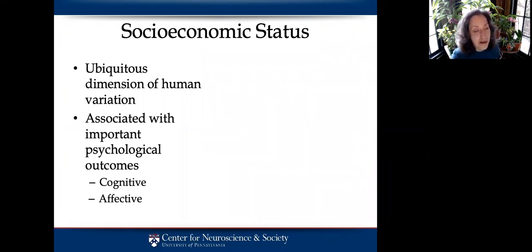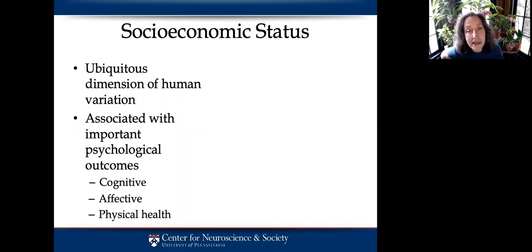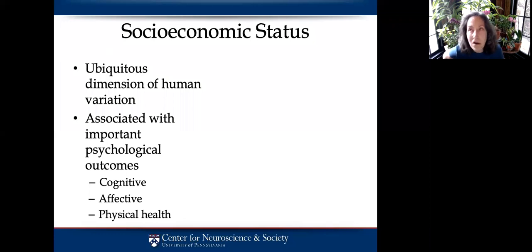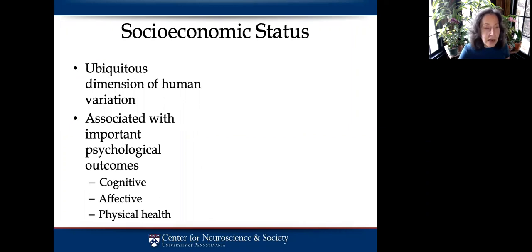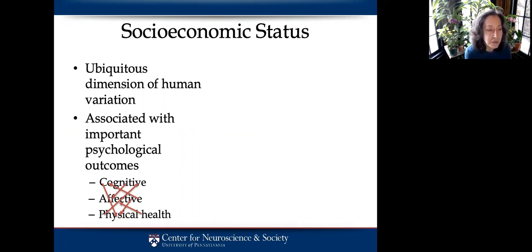Finally, there's another factor here — physical health — which turns out to be interrelated, as you will see in the coming talks, with these other psychological outcomes. There are steep gradients in physical health and in longevity also as a function of SES. These different traits are highly interconnected; they influence each other. There's a web of mutual influence that is also related to socioeconomic status.